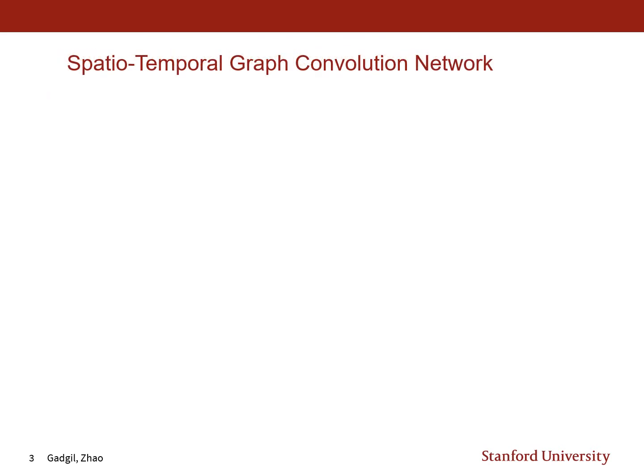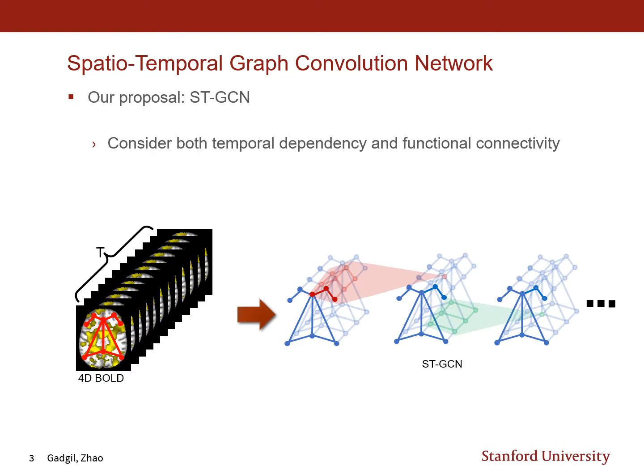We propose a spatiotemporal graph convolution network, or STGCN, which considers both the temporal dependency and the functional connectivity of the brain networks as obtained from the BOLD signal of the functional MRI scan.